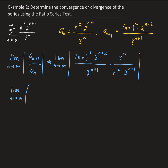I'm going to go ahead and remove the absolute values here because there are no negative signs. Then, just like last time, I'm going to group things — grouping by the polynomials and then the exponential functions. So we have (n+1) squared over n squared, and then 2 to the (n+2) over 2 to the (n+1), times 3 to the n over 3 to the (n+1).